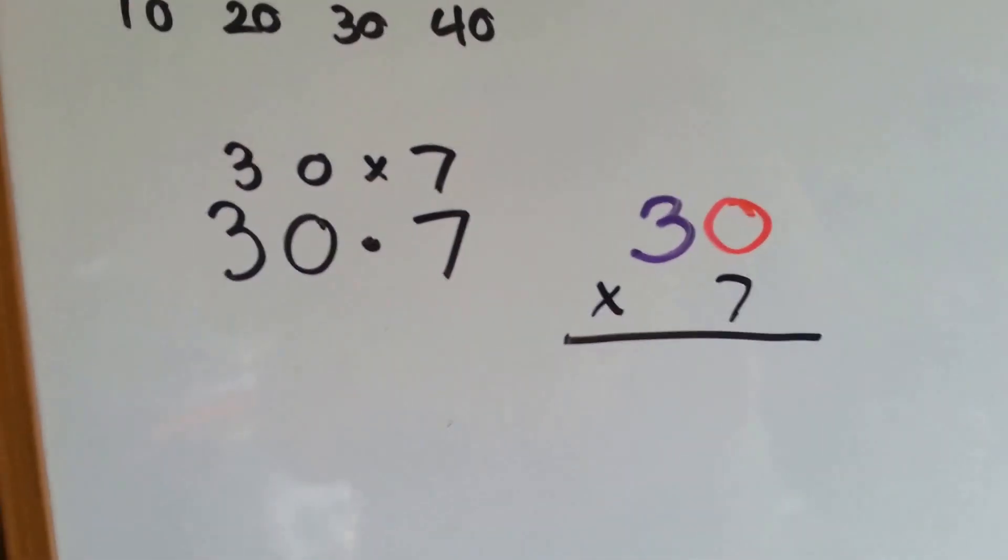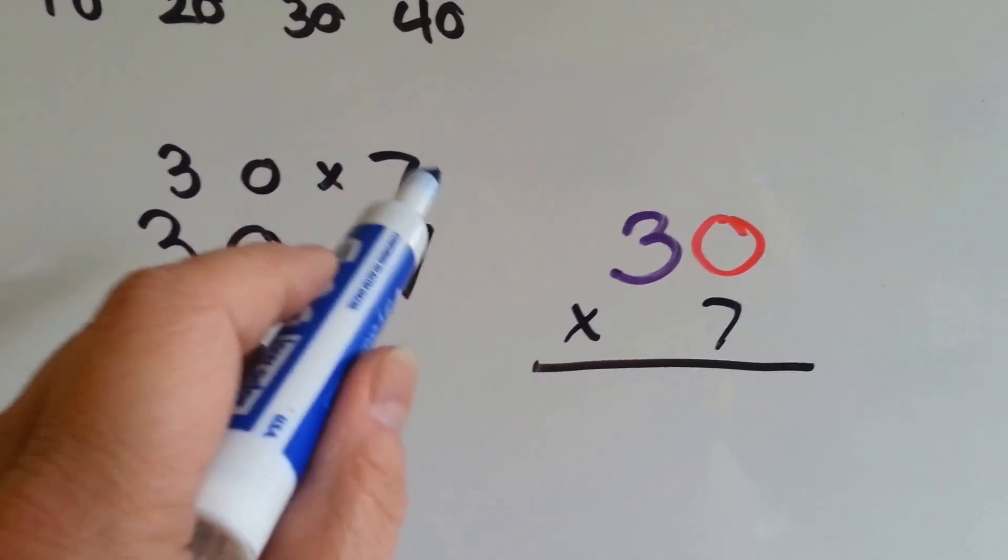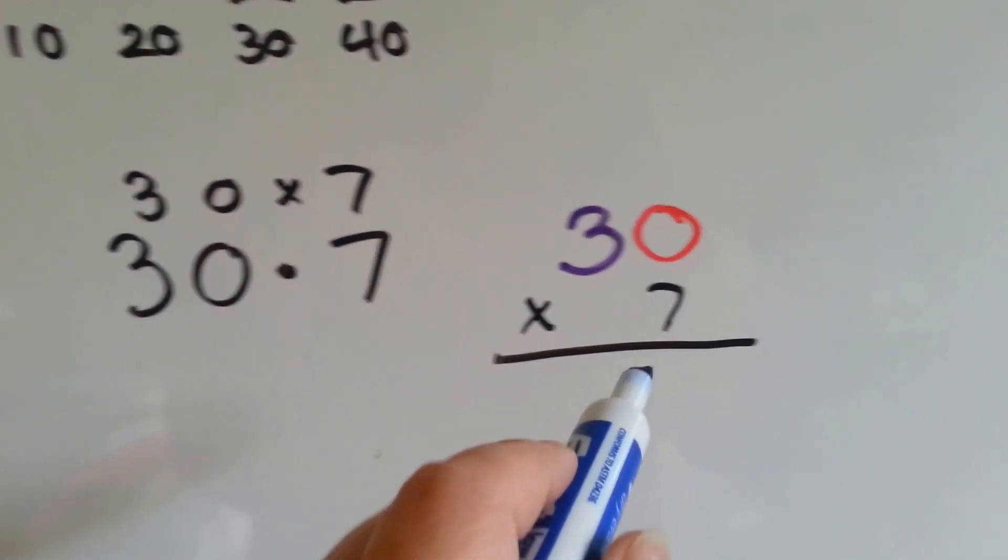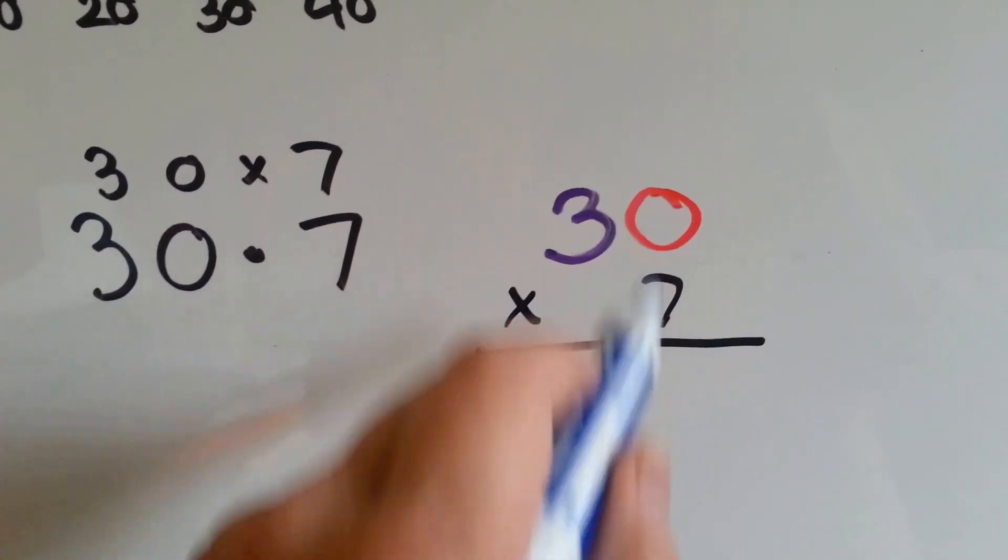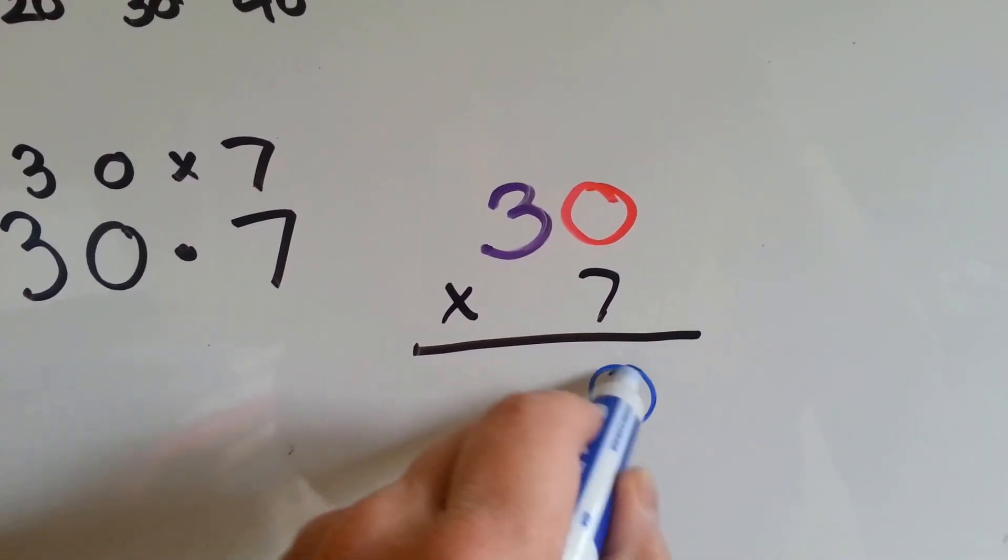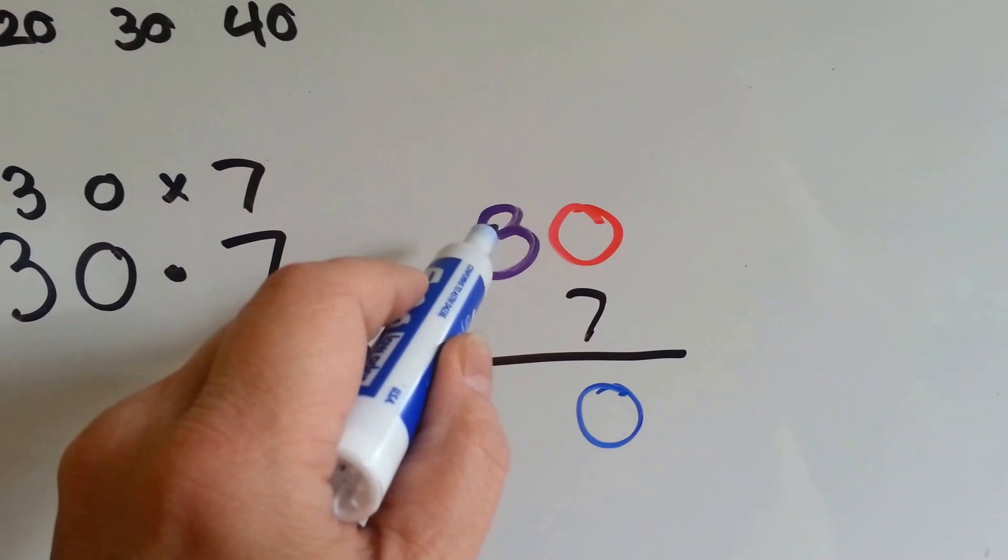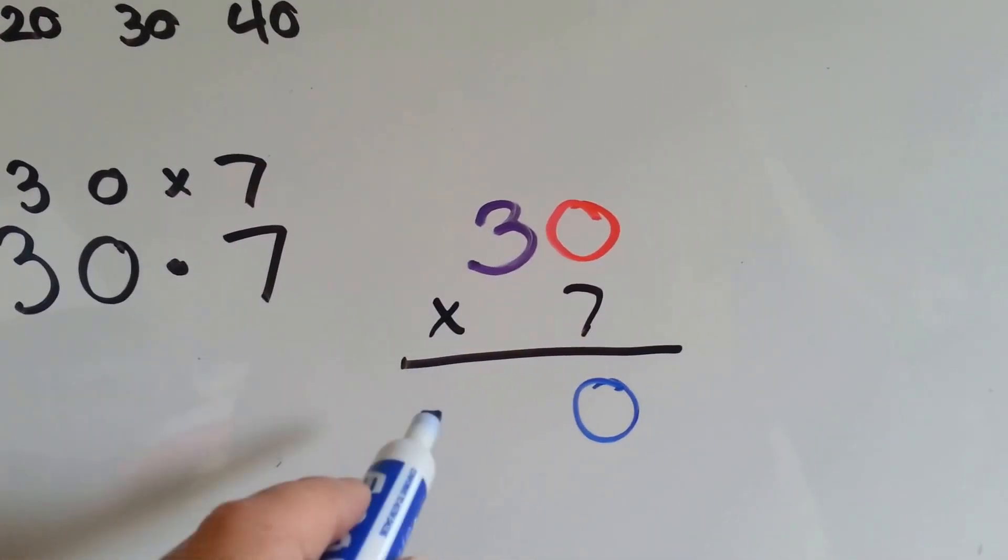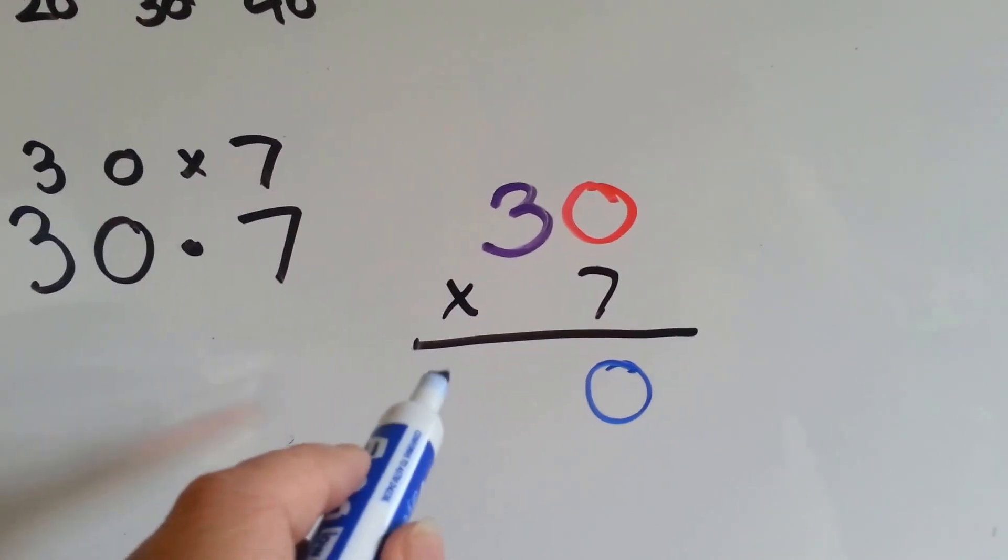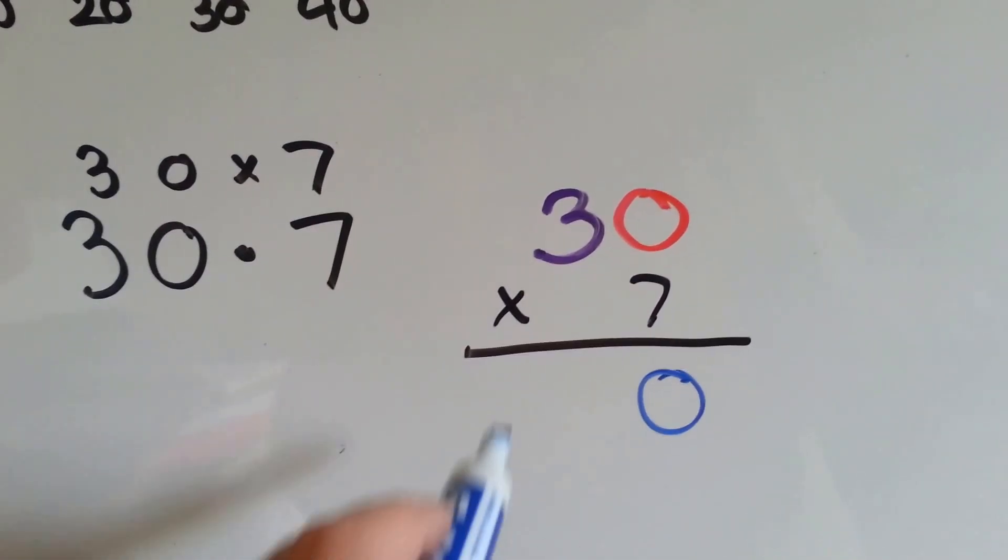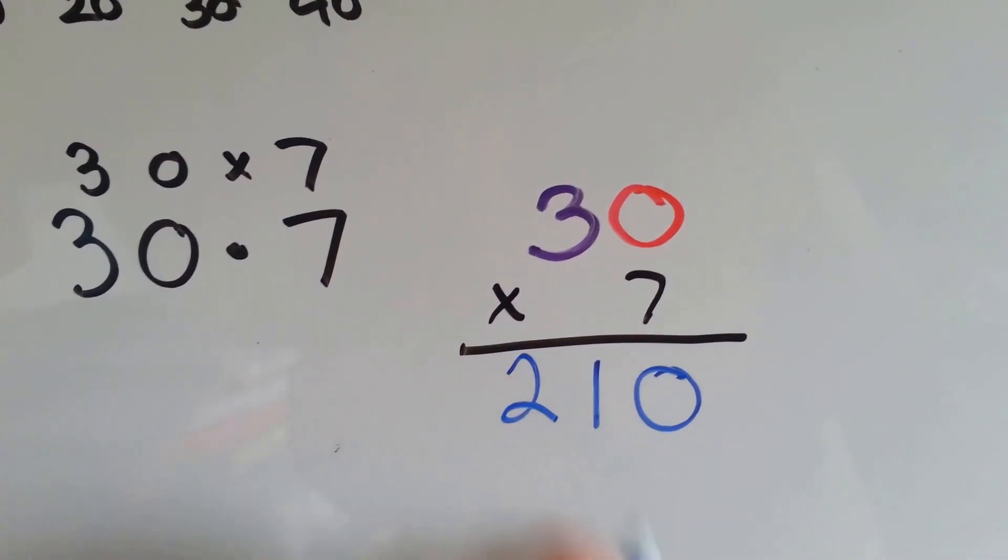Let's try this one. 30 times 7. Here's written with a dot. 30 times 7. We're going to multiply the ones place and put the answer in the ones place. 7 times 0 is 0. And now we're going to multiply the tens place. Now if it's really big, it could go into the hundreds place. 7 times 3 is 21.